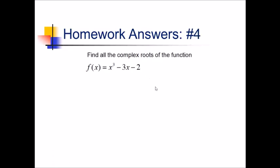For number 4, we're trying to find the complex roots of this function here. Let's start by getting our list of possible rational roots. So that's factors of 2 over factors of 1. Factors of 2, we've got 1 and 2, plus or minus those. And then dividing those by 1 is not going to make any difference. So we have plus or minus 1 and 2, all right?